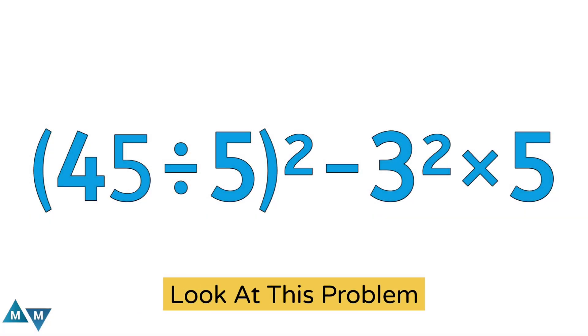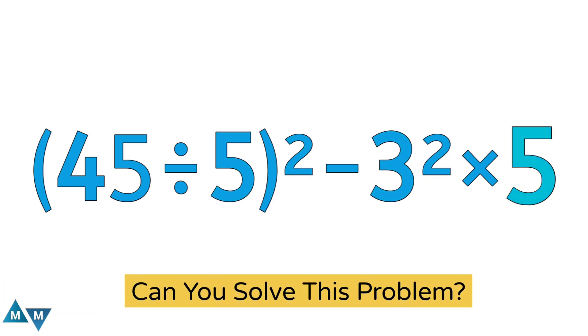Hi, guys. Look at this problem. The problem is parentheses 45 divided by 5 whole square minus 3 square times 5. Can you solve this problem?